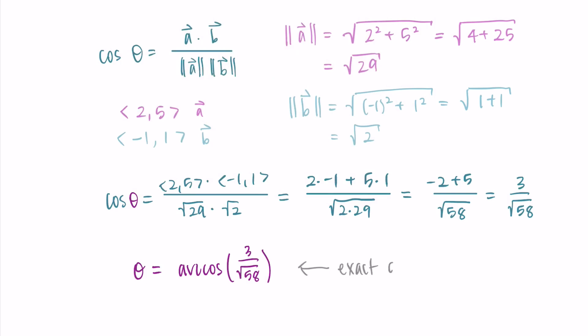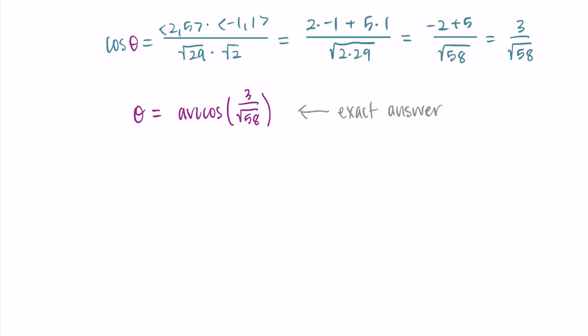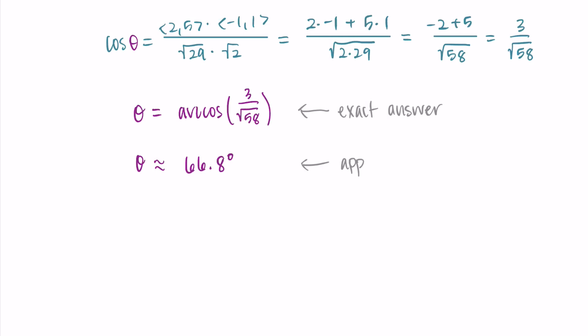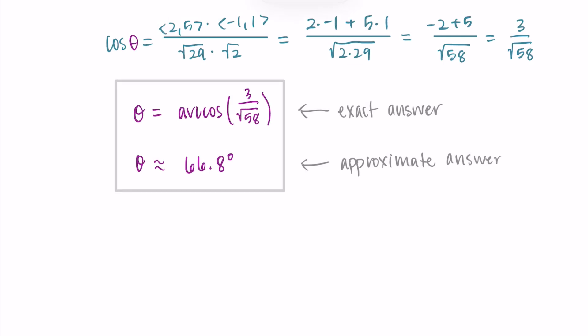This is the exact answer — we haven't rounded or used a calculator, so this is the precise solution. It can be helpful to get an approximate answer using a calculator to get a sense of the angle. When I type it in, I get approximately 66.8 degrees. This tells me the angle between vectors a and b is 66.8 degrees, which I definitely couldn't have determined just by looking at the graph.